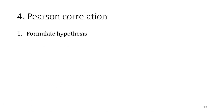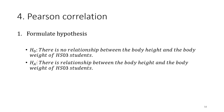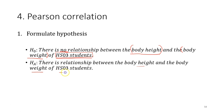The first step is to formulate the hypothesis. The statistical hypothesis for the correlation test is quite different from the t-test. For the null hypothesis, we say: there is no relationship between body height and body weight of conservation biology students. There are a few important elements: the variables must be mentioned in the hypothesis, along with your population. For the alternative hypothesis, it is the opposite: there is a relationship between body height and body weight of conservation biology students.